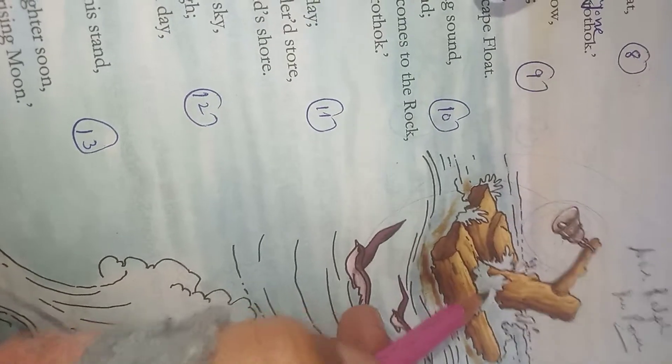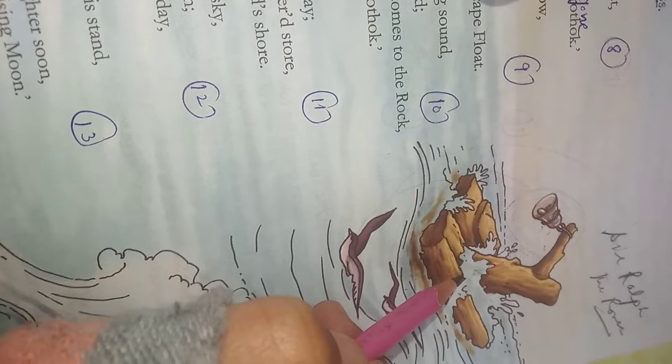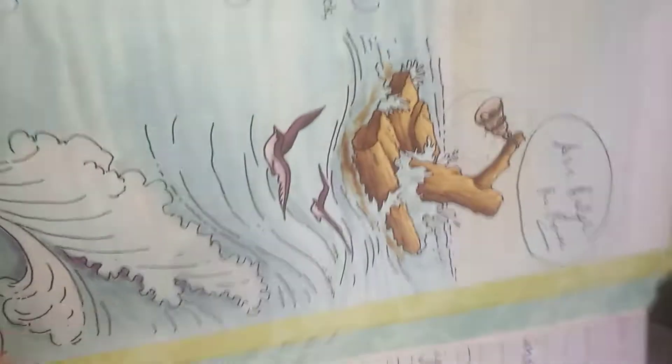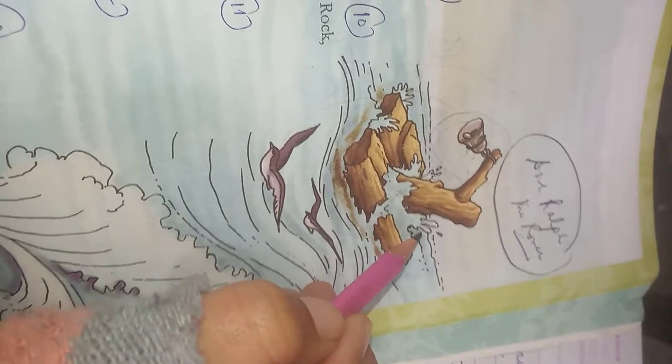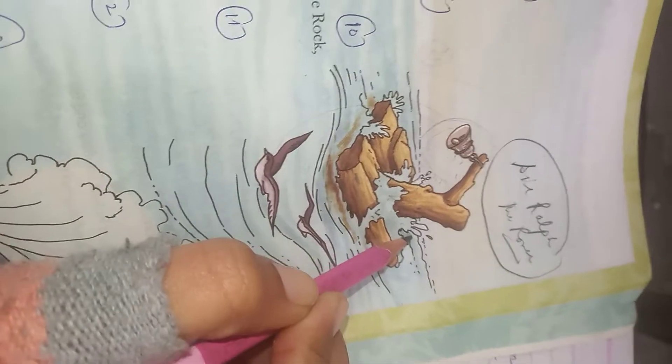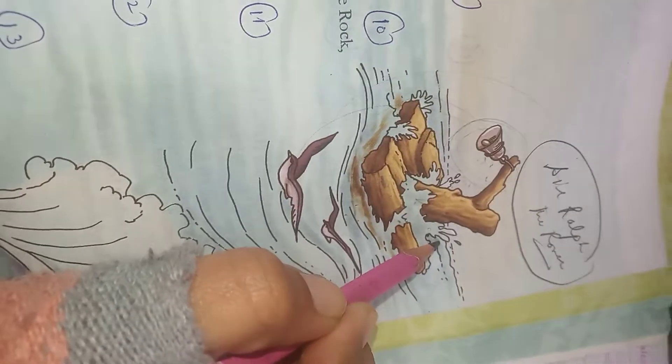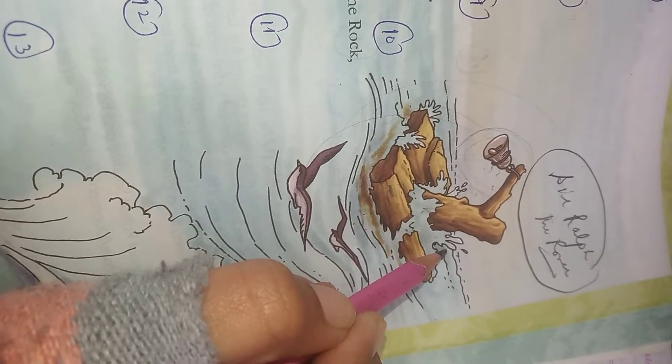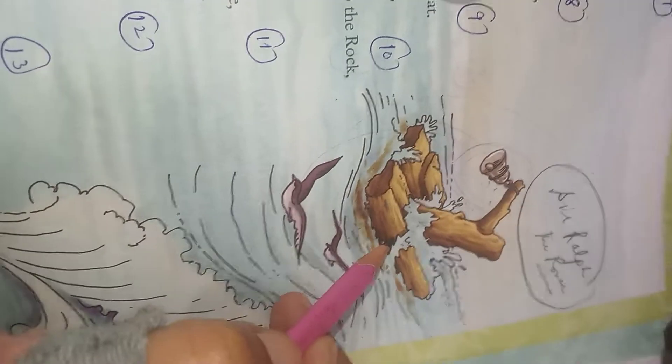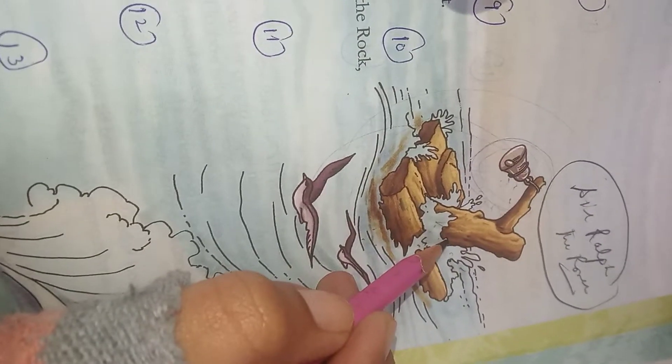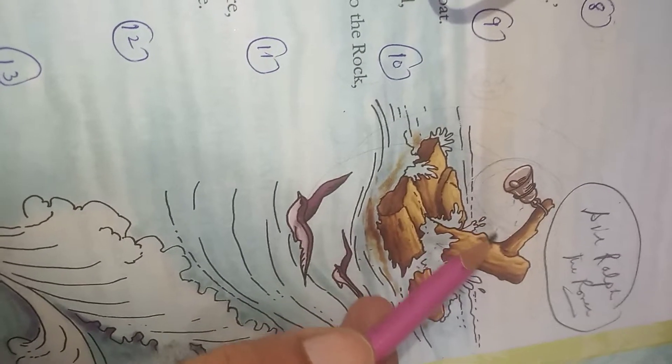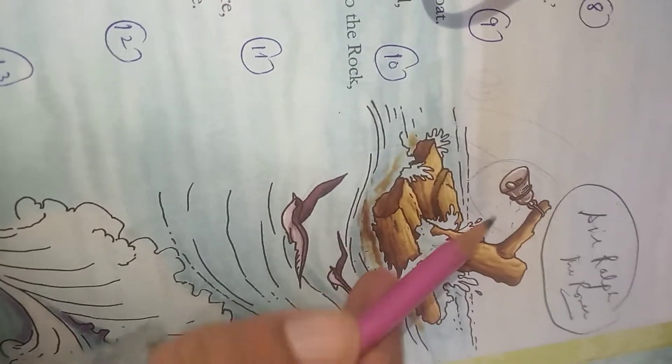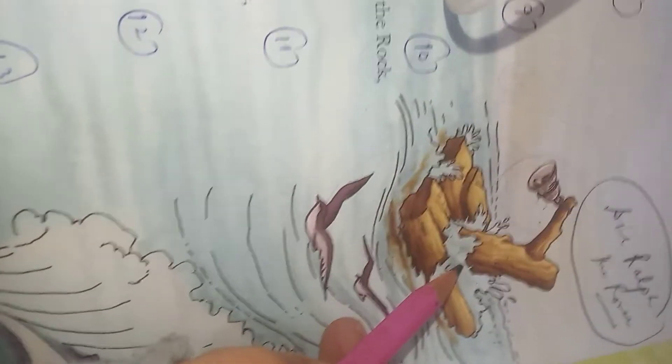But unlike Abbot of Aberbrothok, there are many evil people and one of them was Sir Ralph the Rover. This is the villain of the story. Ralph the Rover, he was a pirate actually - pirate means a sea robber. He was jealous of Abbot of Aberbrothok because people always blessed him. One day, what did he do? Out of mischief, he cut the warning bell which was hanging by Abbot of Aberbrothok. So when this bell was cut or removed, let's read what happened next. Side by side we'll get to read.